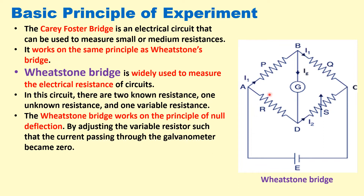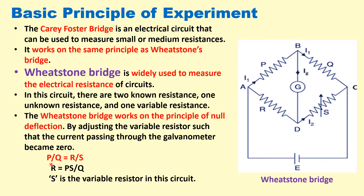The variable resistance is shown by an arrow and it works on the principle of null deflection. In the balancing condition, the galvanometer should show zero reading or null point. In that condition, P by Q should be equal to R by S, and we can find the unknown resistance R equal to P into S by Q, where S is the variable resistor of the circuit.